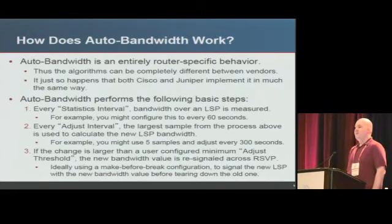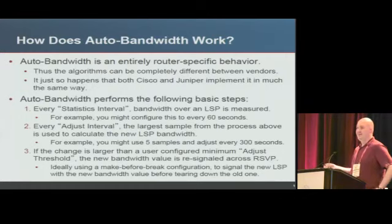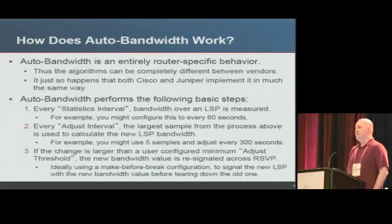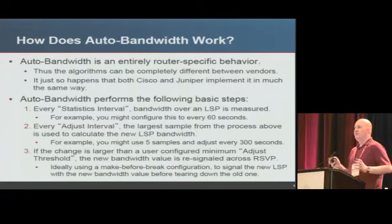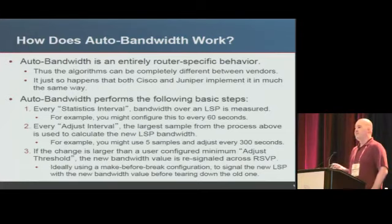The auto bandwidth algorithm is surprisingly similar between Cisco and Juniper. You have a statistics interval — for example 60 seconds — that gives you one data sample measuring traffic rate over an LSP. You then have an adjust interval that looks at multiple samples. For example, a five-minute adjust interval looks at five 60-second samples and checks if the peak sample changed enough to warrant re-signaling. If so, you tear down the old LSP and set up a new one with the new bandwidth.